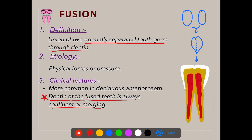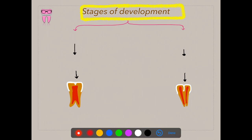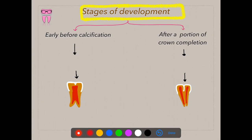Fusion is exclusively due to the confluence or merging of dentin of two normally separated tooth germs. This is a very important point: fusion is the union of two teeth by dentin. It is more common in anteriors than posteriors. There are different stages in tooth development — one is early before calcification, and another is soon after a portion of the crown has been completed.